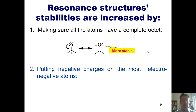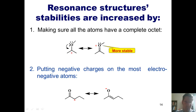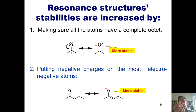Rule two: put negative charges on the most electronegative atoms. Here's an example. I've got a resonance contributor with a negative charge on a carbon. You can imagine that negative charge closing like a door to form a carbon-carbon double bond and pushing these pi electrons up onto the oxygen to give a negative charge on the oxygen. Both are completely legitimate resonance contributors. In the example on the right, I have the negative charge on the more electronegative atom, oxygen, whereas on the left it's on a carbon. Thus, the example on the right is more stable, and the actual molecule will look more like it.